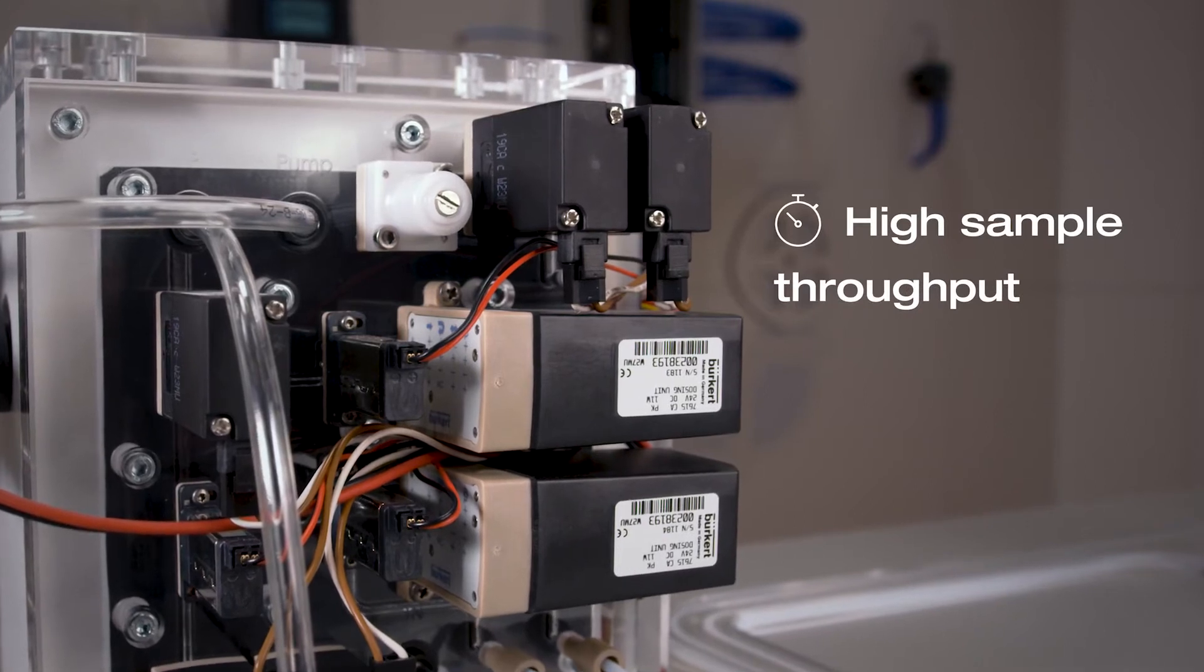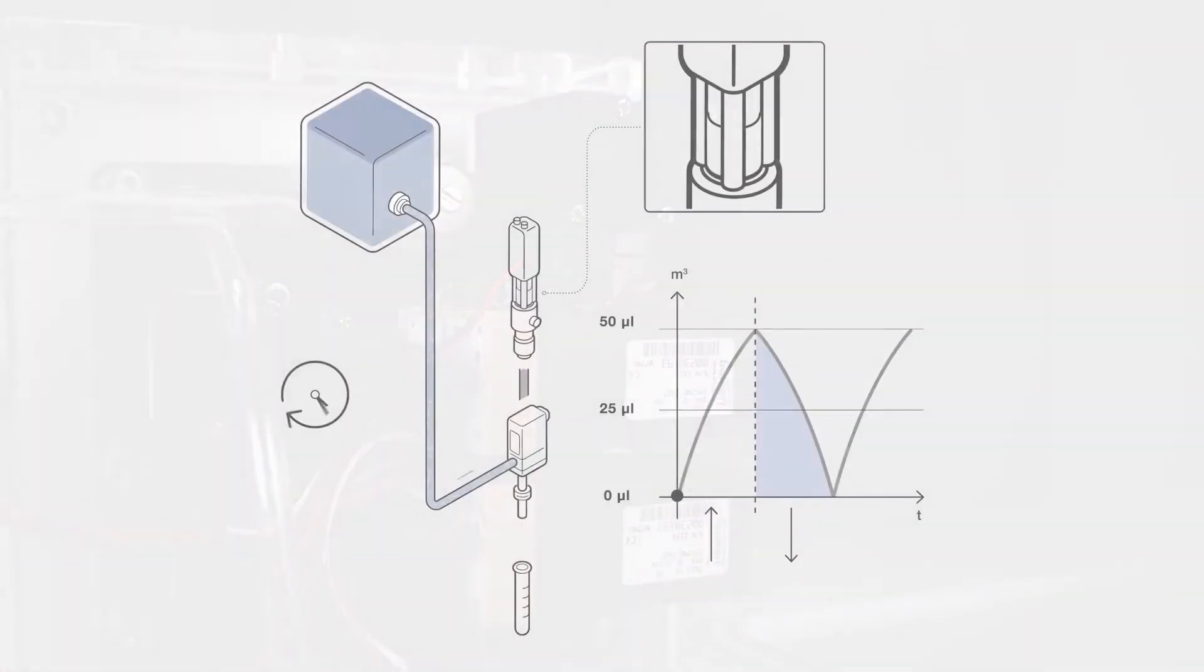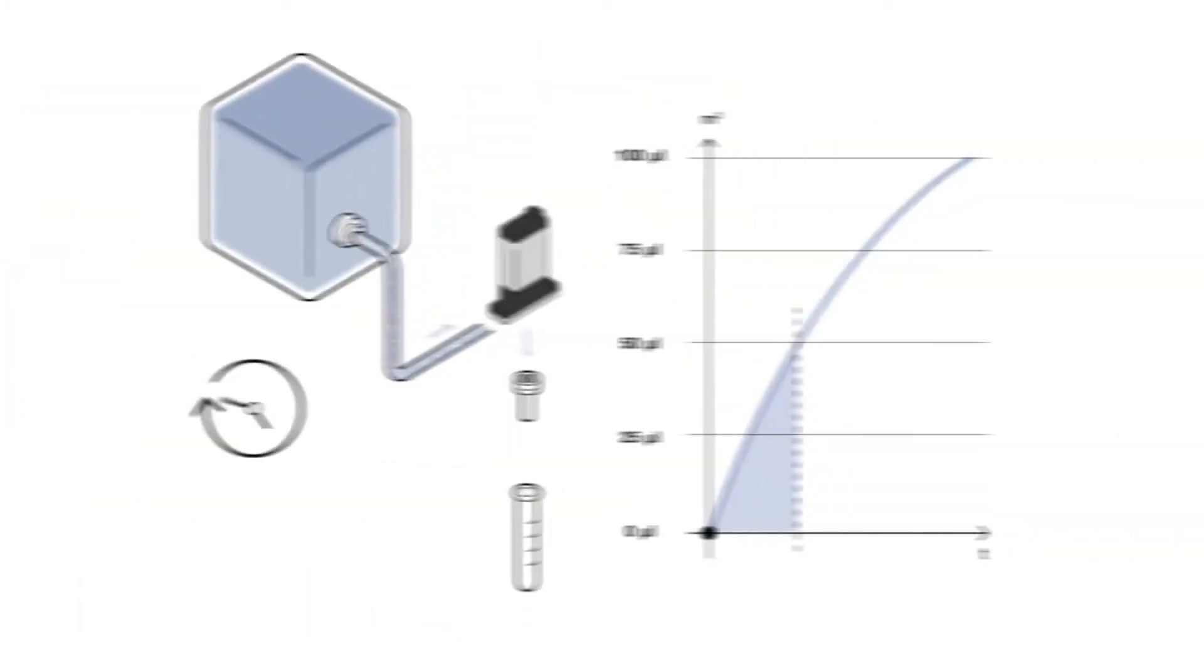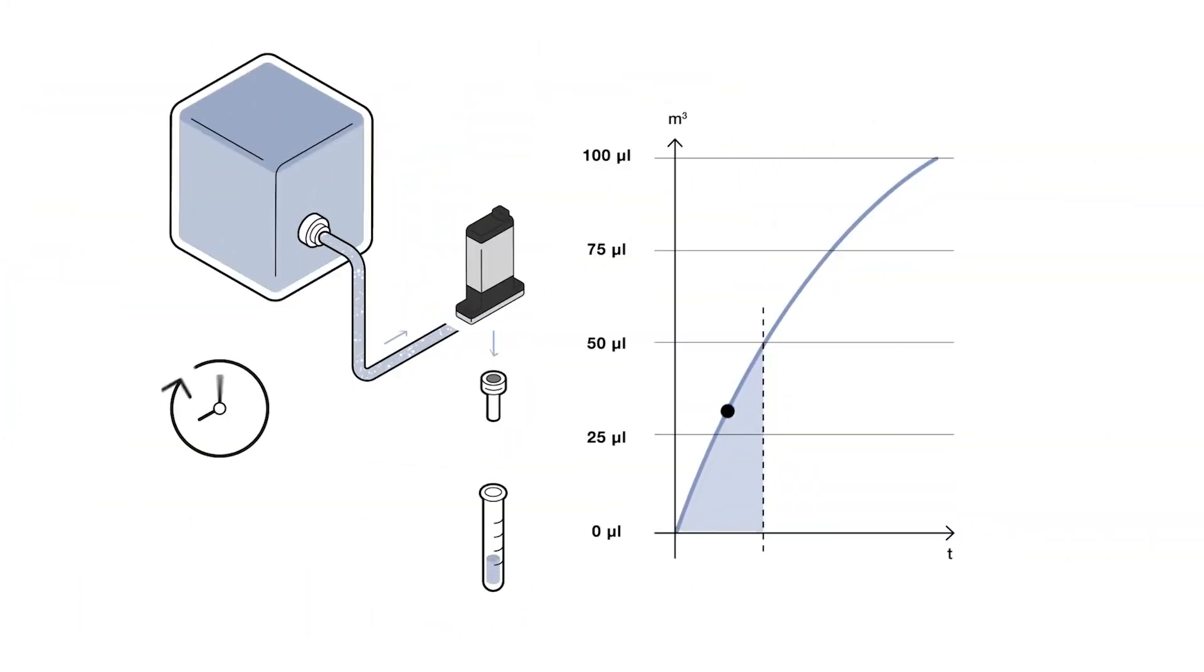Conventional solutions, such as dosing with a syringe pump, require a certain amount of process time due to the necessary draw-up procedure. Time pressure dosing, on the other hand, accelerates your process while maintaining consistent quality and flexible dosing quantities.